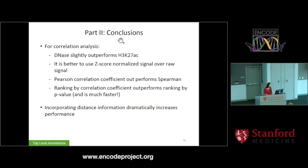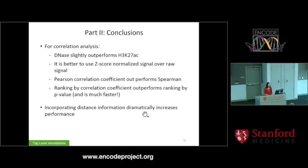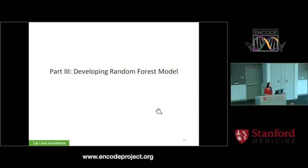In conclusion for the predominant method of predicting target genes - correlating DNase or histone mark signal across a panel of cell types - DNase slightly outperforms K27AC, and it's better to use Z-score normalized signal rather than raw signal, which makes sense as raw signal depends on sequencing depth. Pearson correlation coefficient outperforms Spearman, and ranking by correlation coefficient outperforms ranking by p-value, which is good news because p-value computation takes much longer. Incorporating distance information drastically increases performance.